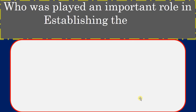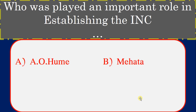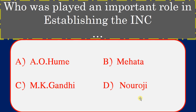Who played an important role in establishing the Indian National Congress? Options: A.O. Hume, Behata, M.K. Gandhi, Dadabhai Naoroji. Correct answer: A.O. Hume.